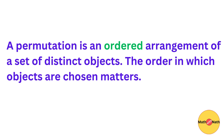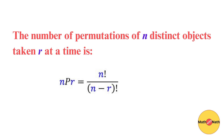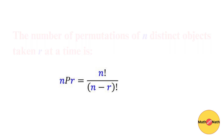We define the number of permutations of n distinct objects taken r at a time as nPr, which equals n factorial over (n minus r) factorial.